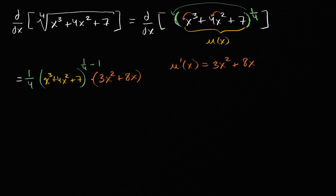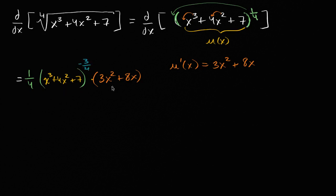I can clean this up a little bit. Let me rewrite that exponent: one-fourth minus one is negative three-fourths. So we have negative three-fourths as the power. You could manipulate this in different ways, but the key is to recognize that this is an application of the chain rule.